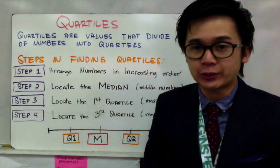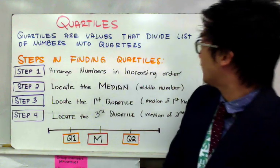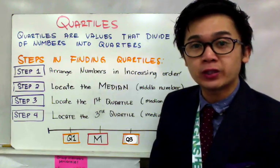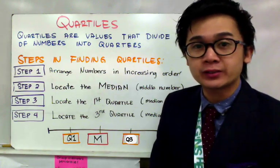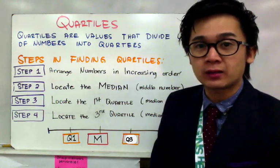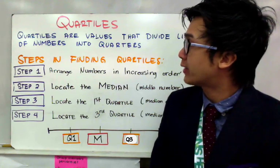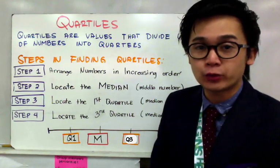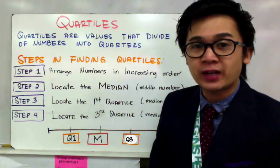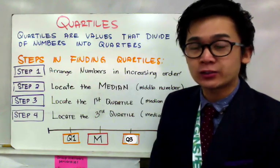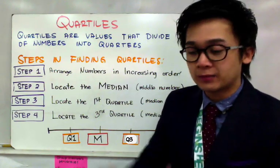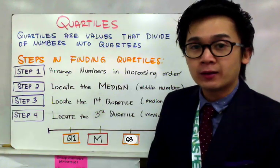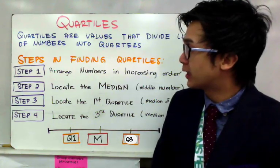Quartiles, by definition, are values that divide the list of numbers into quartiles. In statistics, we will learn how to organize numbers graphically and numerically. We're going to do a graphical display on how we will organize our set of numbers into quarters. The steps in finding the quartiles or creating a four-partition list in your unorganized list will be as follows.